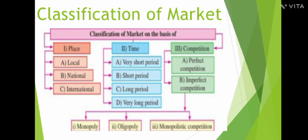Third is on the basis of competition — that is, spardha. On the basis of competition, there are two categories: perfect competition and imperfect competition. Imperfect competition is further divided into three categories: monopoly market, oligopoly market, and monopolistic competition.